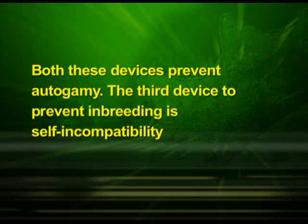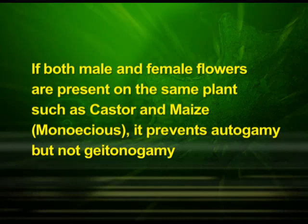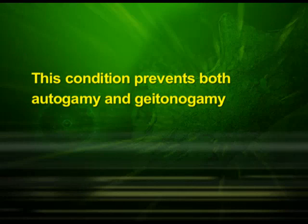The third device to prevent inbreeding is self-incompatibility. This is a genetic mechanism that prevents self pollen — from the same flower or other flowers of the same plant — from fertilizing the ovules by inhibiting pollen germination or pollen tube growth in the pistil. Another device to prevent self-pollination is the production of unisexual flowers. If both male and female flowers are present on the same plant, such as castor and maize (monoecious), it prevents autogamy but not gitonogamy. In several species such as papaya, male and female flowers are present on different plants — each plant is either male or female — and this condition prevents both autogamy and gitonogamy.